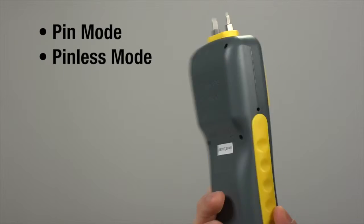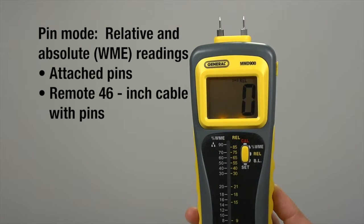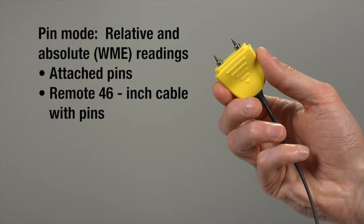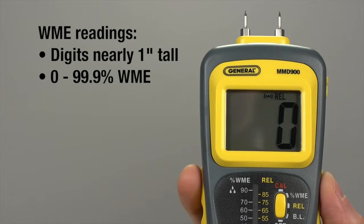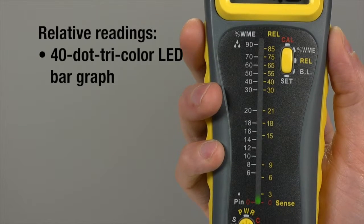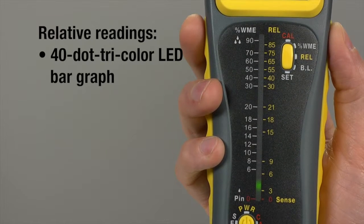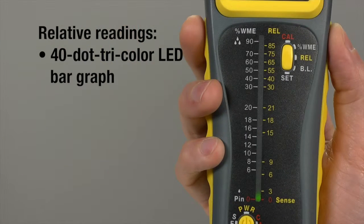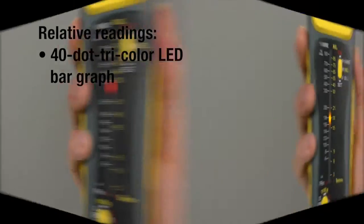Features pin and pinless measurement modes. In pin mode, use either the attached pins or pins on 46-inch cable. You get both percentage wood moisture equivalent or WME and relative readings on its tri-color LED bar graph at the same time. Green indicates dry, red wet, yellow intermediate.